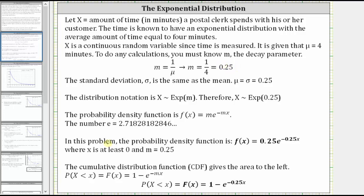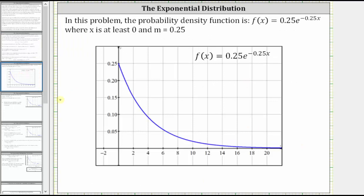And therefore, the probability density function is f(x) = 0.25e^(-0.25x), which gives us the exponential distribution, which is shown here.